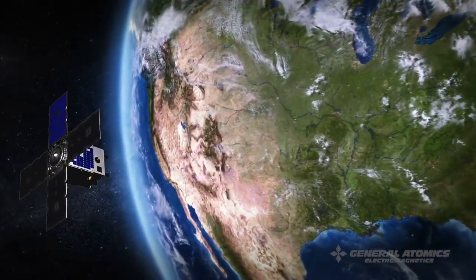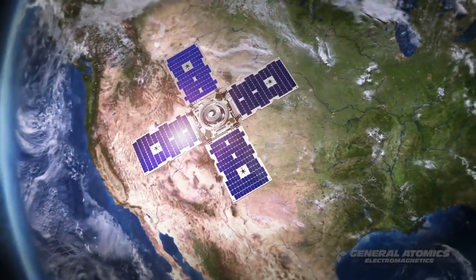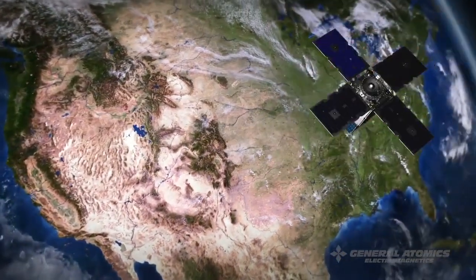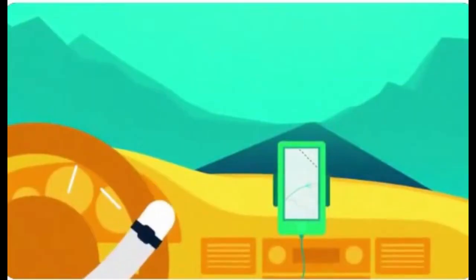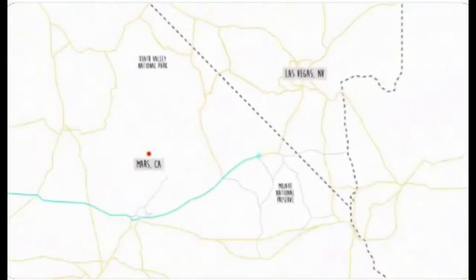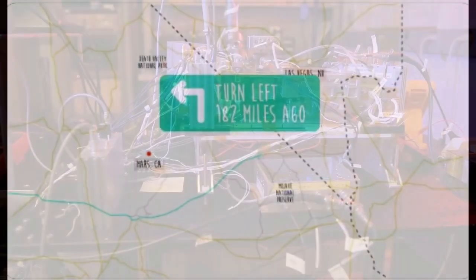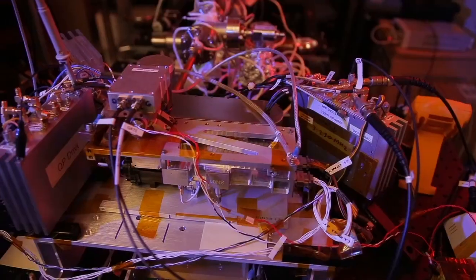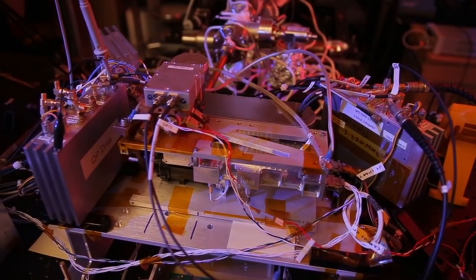The Deep Space Atomic Clock is a serious upgrade to the satellite-based atomic clocks that, for example, enable the GPS on your phone. Ultimately, this new technology could make spacecraft navigation to distant locations like Mars more autonomous.